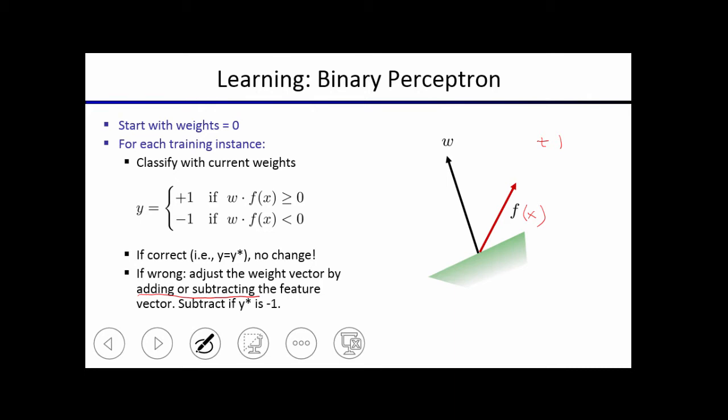So what this looks like is, if it's a positive example, it will move the weight vector more towards your example. It will increase the component of that weight vector that's in the direction of your feature vector. And if it incorrectly classifies a negative example, then it will subtract this feature vector from the weight vector. So the exact equation is right here.